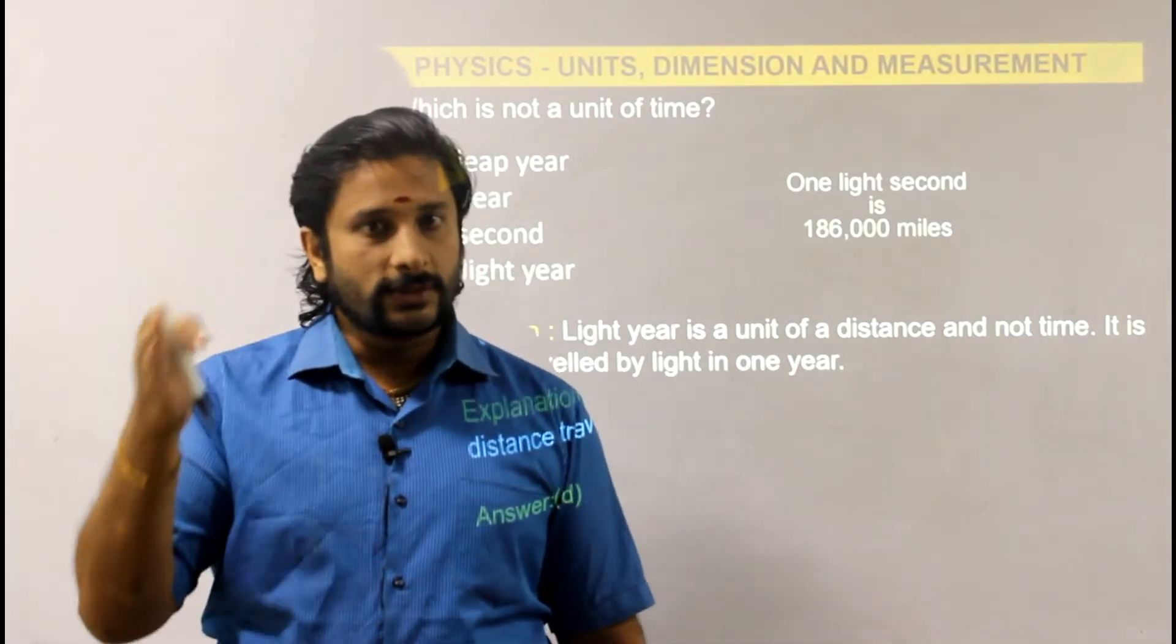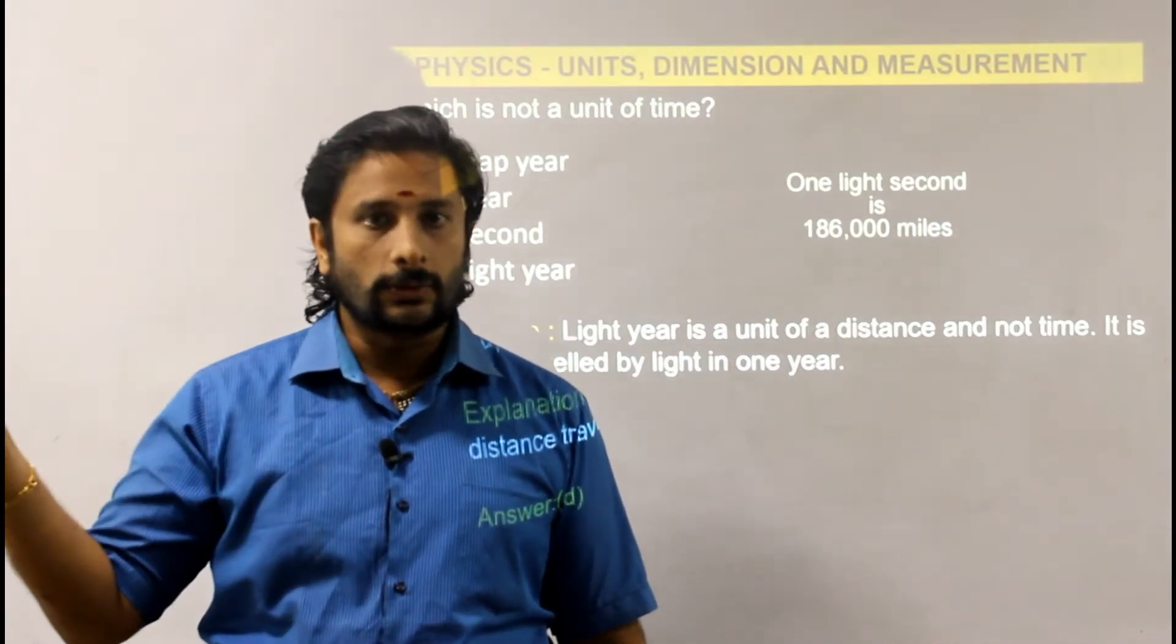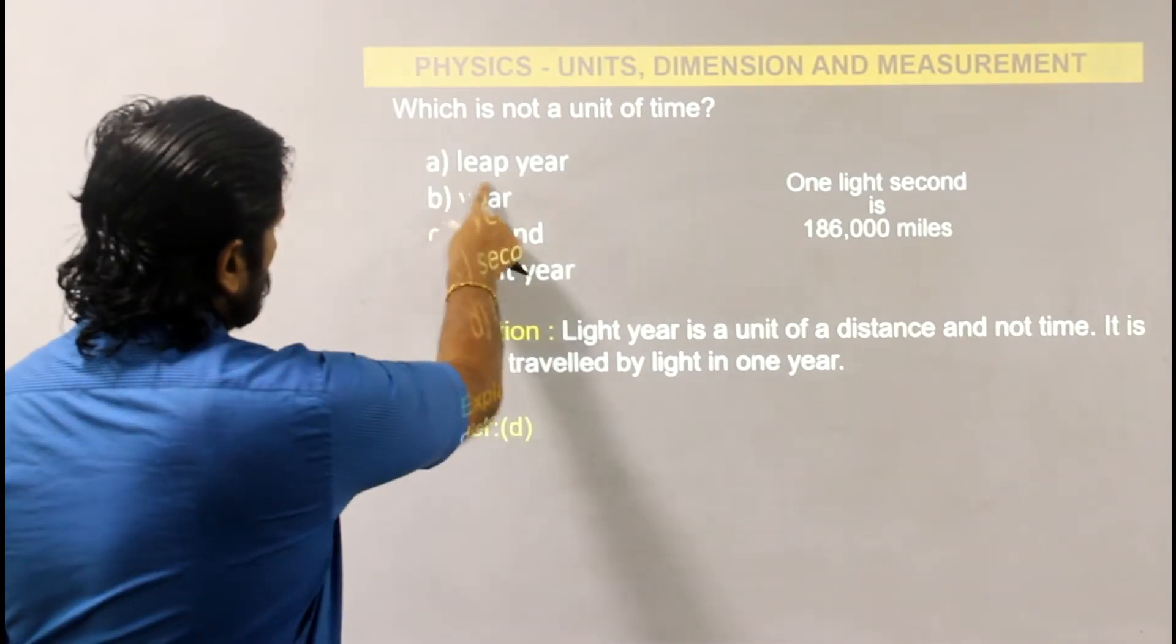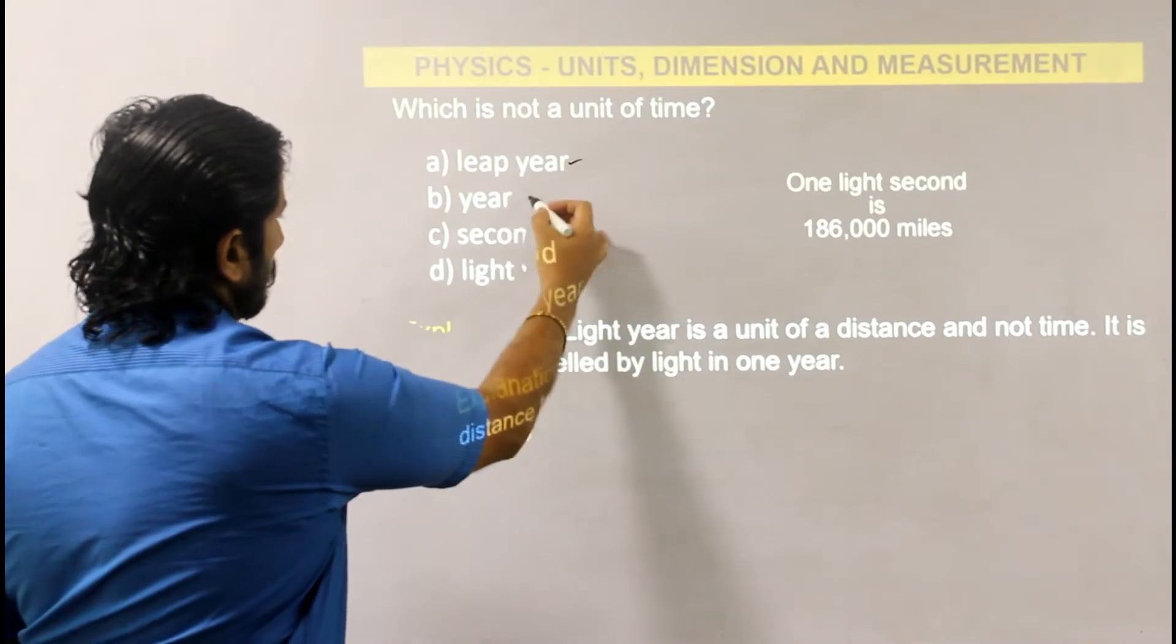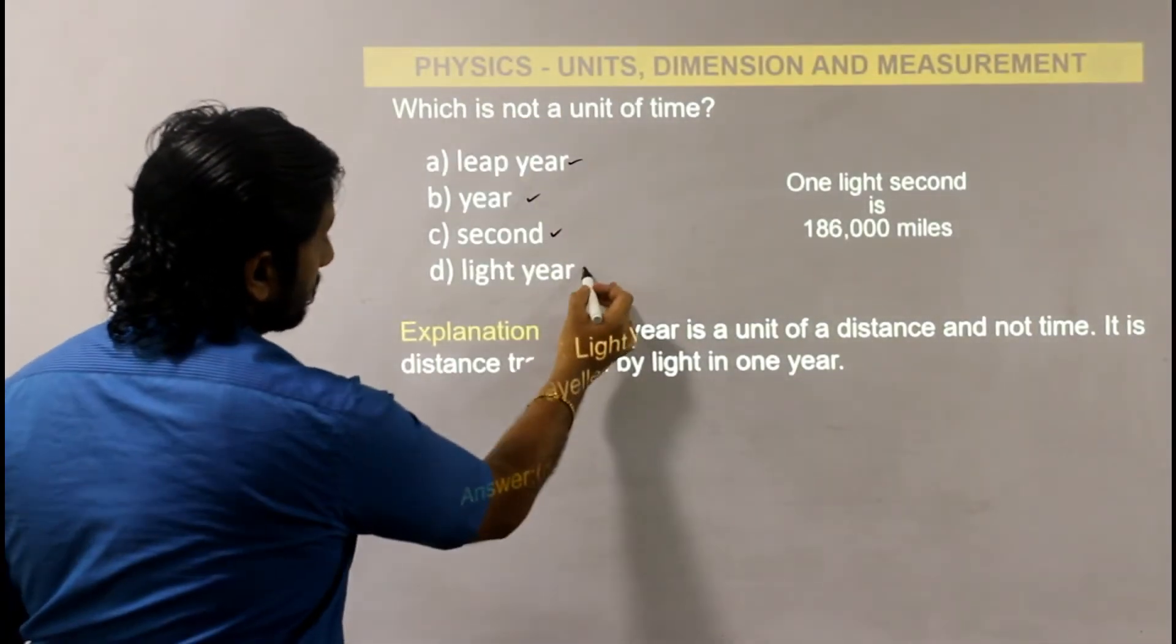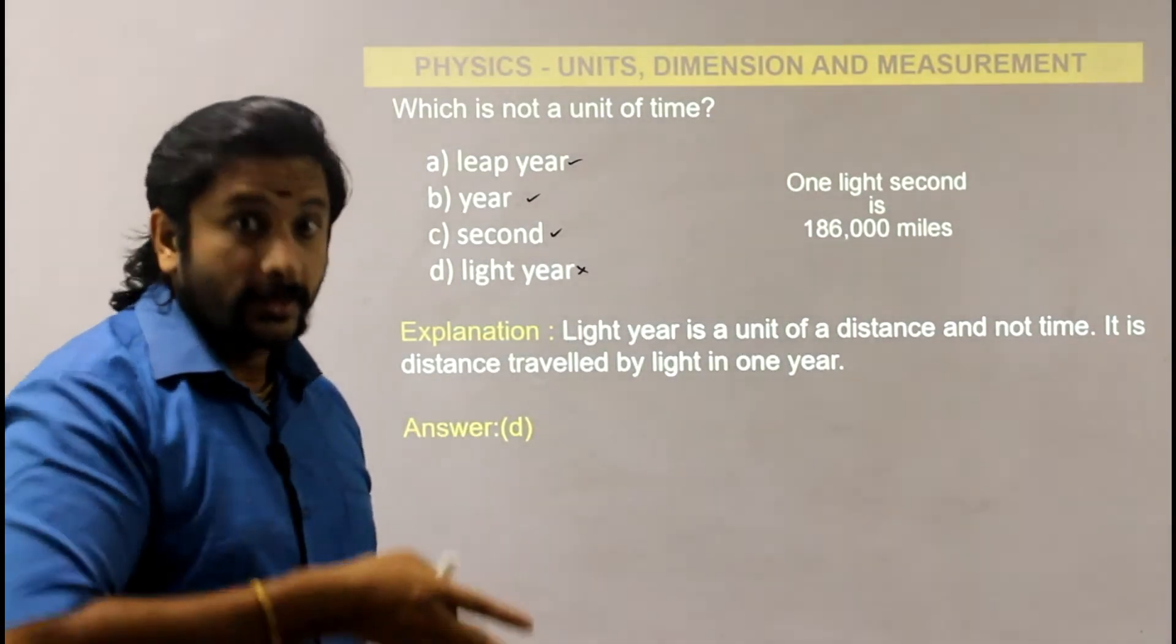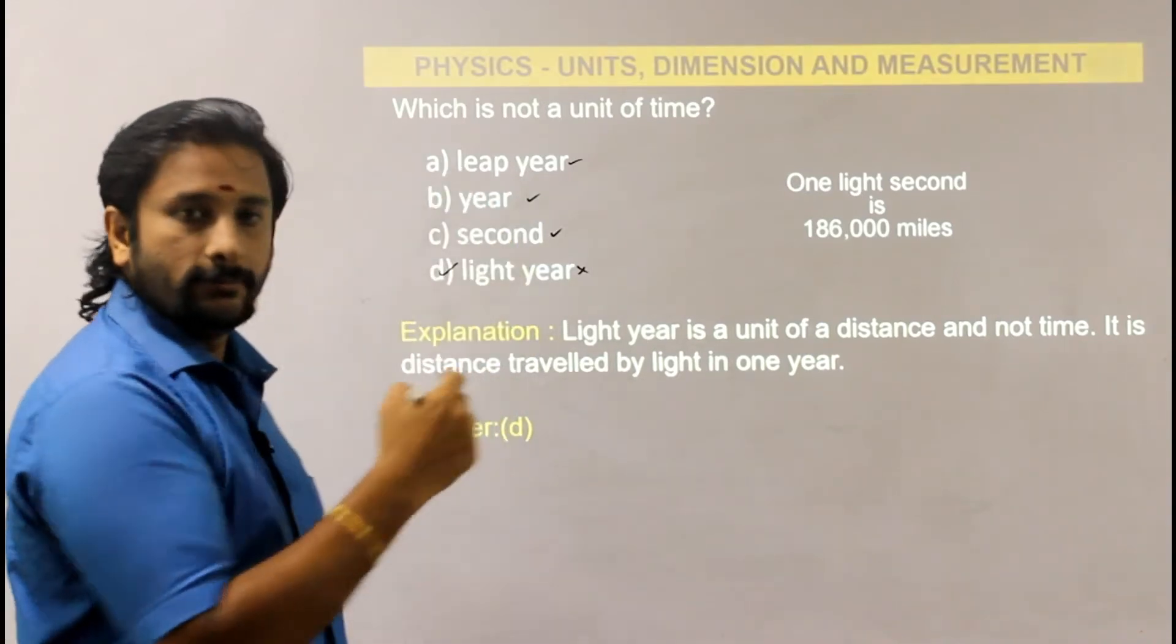Which is not a unit of time? Time units are seconds, minutes, hours, day, week, month, and year. Leap year is time calculation, year is time calculation, second is time calculation. But light year is not a time calculation. Light year is distance. So the answer is option D.